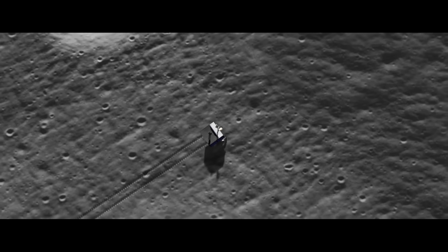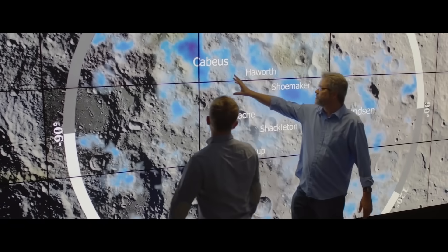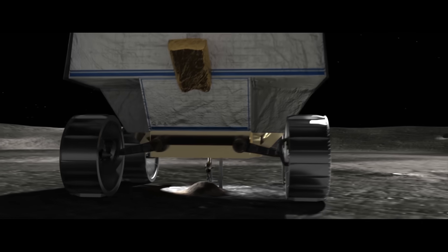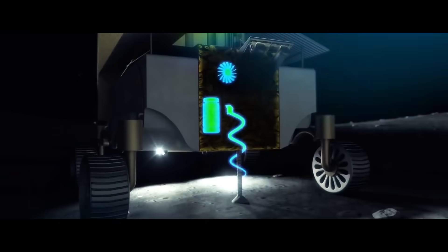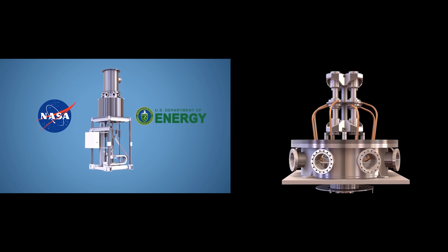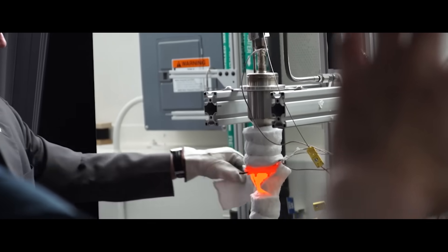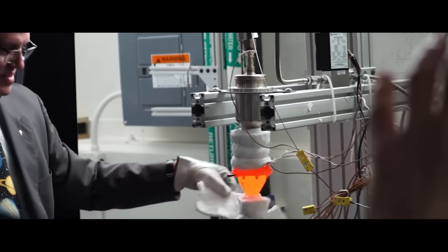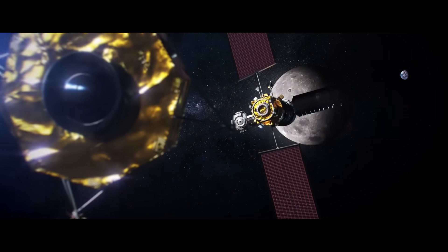We will learn how to utilize the resources we find on these other worlds. Starting with finding water ice and purifying it to drinkable water, and refining that into hydrogen for fuel and oxygen to breathe. We will establish fission power plants on the surface of the moon capable of supporting a growing community of efforts. And we will expand the logistics supply chain to enable commercial and international partners to resupply and refuel deep space outposts.